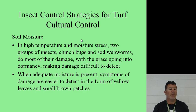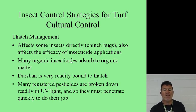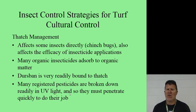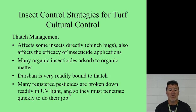Moisture and high temperature: two groups of insects — chinch bugs and sod webworms — do most of their damage when grass is going into dormancy, making damage difficult to detect. When adequate moisture is present, symptoms are easier to detect as yellow leaves and small brown patches. Thatch management affects some insects directly. Chinch bugs also affect the efficiency of insecticide applications, as many organic pesticides absorb into the thatch. Many registered pesticides need to be watered in to get down into the soil.